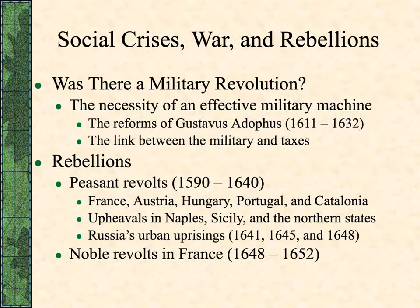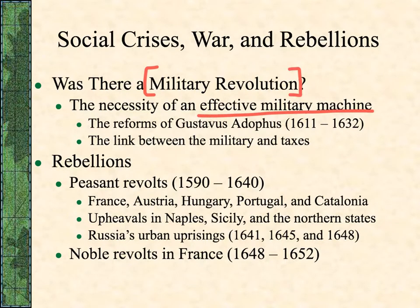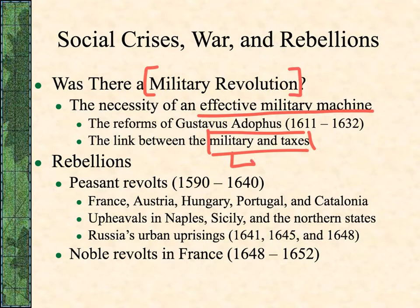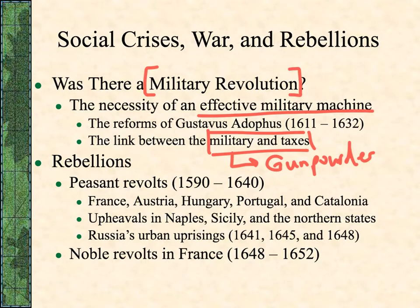There is a military revolution here because there is a change that helps this power struggle move along. These rulers need an effective military machine. Gustavus Adolphus is one of the big reformers. There's a key link between the military and taxes. The old military of the knights is gone, and this new military is ruled by gunpowder. Once you've trained and outfitted soldiers, you can't as a monarch just dissolve your army — you have to maintain a professional force ready at any time.